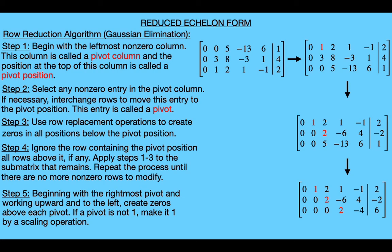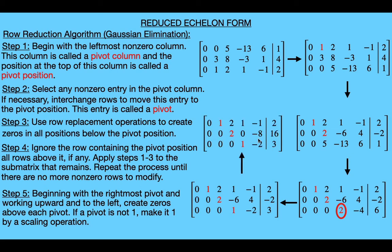In our example we start with the rightmost pivot in the fourth column. We first use a scaling operation to make this pivot one, multiplying every entry of the third row by one-half to get a new row three. Then we use this one to eliminate the negative six above it by replacing the second row with the sum of itself and six times the third row, giving us a new second row. We also replace the first row with the sum of itself and negative one times the third row to get a new row one.